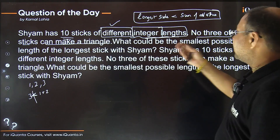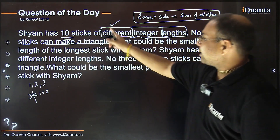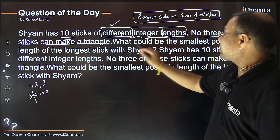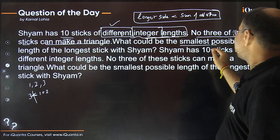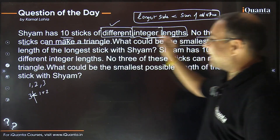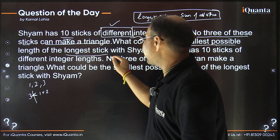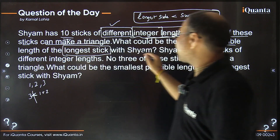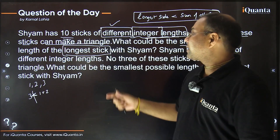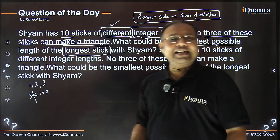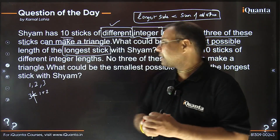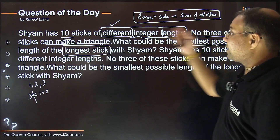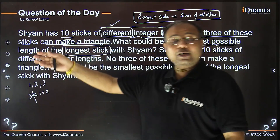Now the actual question: what could be the smallest possible length of the longest stick? Among all 10 sticks, what is the minimum possible value for the longest stick's length, given the condition that no three sticks can form a triangle?